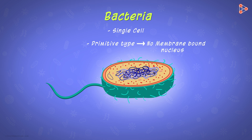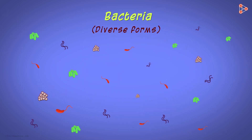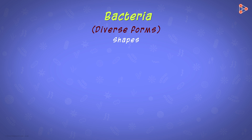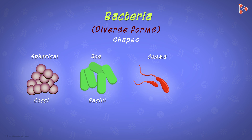Would studying them be simpler then? Not really. Bacteria, in spite of their unicellular and prokaryotic nature, come in diverse forms — various shapes and sizes — and are present almost everywhere around us. We classify them into four major groups based on shapes: the spherical ones called coccus (plural cocci), the rod-shaped ones called bacillus (plural bacilli), the comma-shaped bacteria called vibrio (plural vibrios), and the spiral-shaped ones called spirillum (plural spirilla).